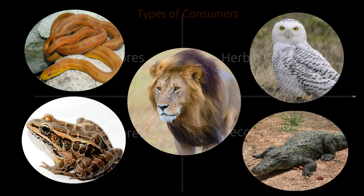Carnivores eat only other animals. Lion, tiger, crocodile, frog, owl, and snakes are a few carnivores.